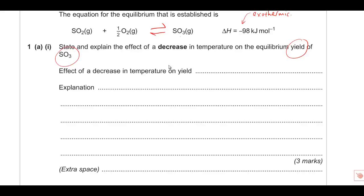When we decrease temperature, the equilibrium through Le Chatelier's principle is going to look to undo that - it's going to try to increase temperature by favouring the exothermic reaction. From the enthalpy change, the forward reaction is exothermic, therefore decreasing temperature favours the forward reaction. The equilibrium position shifts to the right, producing more SO3, so the yield is going to increase. That gets you the first mark.